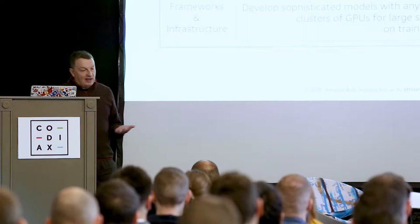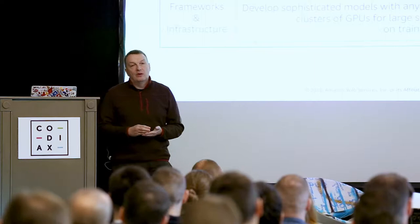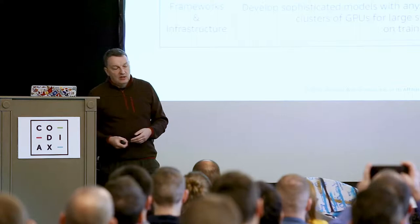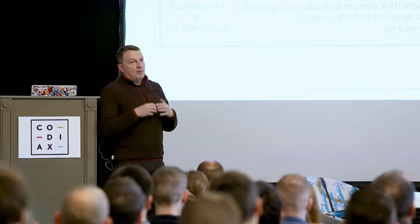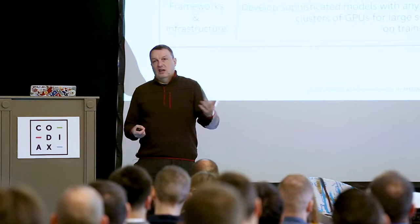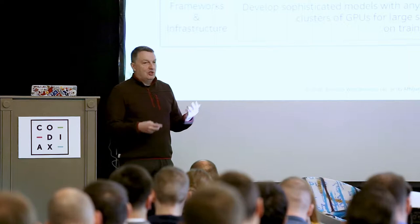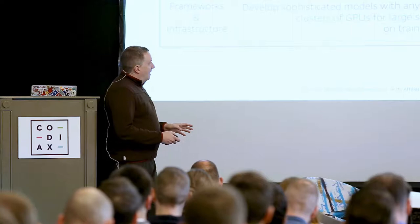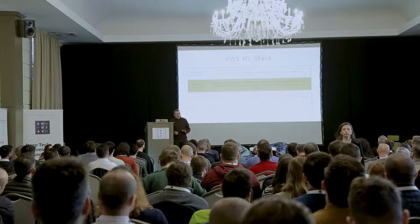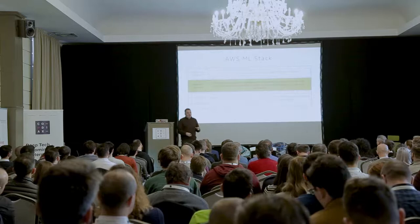Over the years we've built a machine learning stack you can look at in three different layers. The top layer is what we call application services — things like Amazon Rekognition for image and video recognition, Amazon Polly for text-to-speech, Amazon Translate, and so on. These are machine learning black boxes: you pass your data to an API and get an answer in real time. No need to train a model, no need to be a machine learning expert. What I'm going to focus on today is the lower level, where you do have to train a model on your own data.